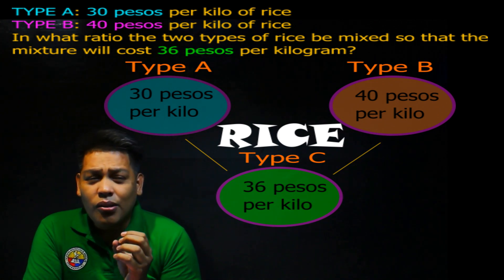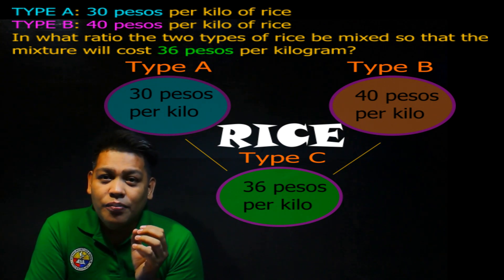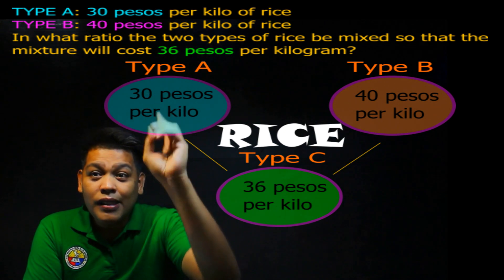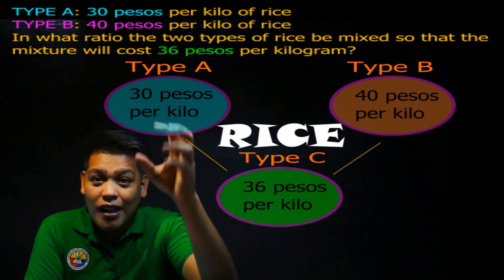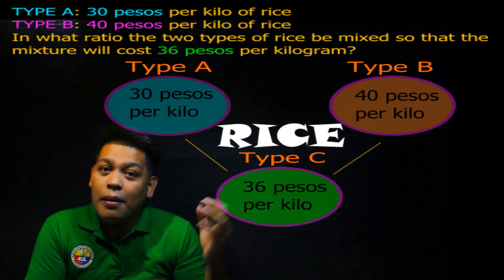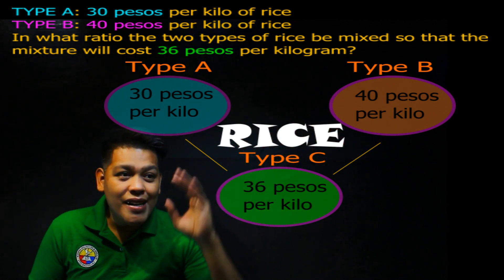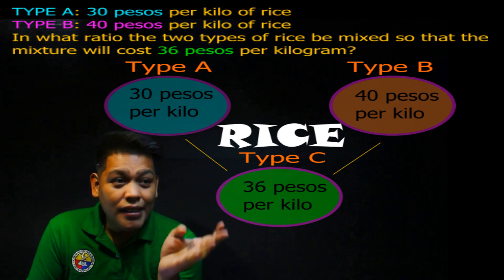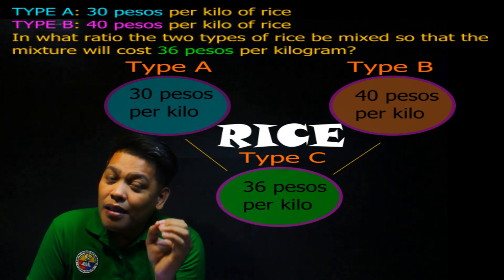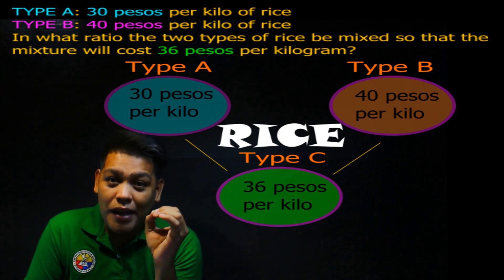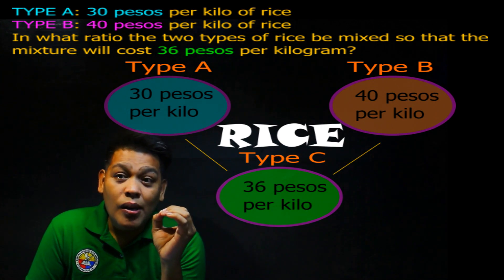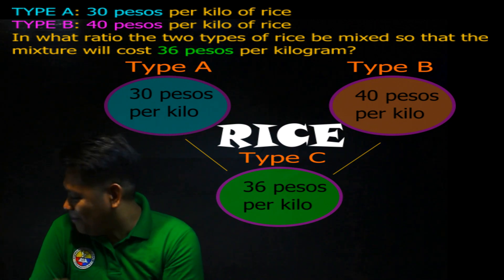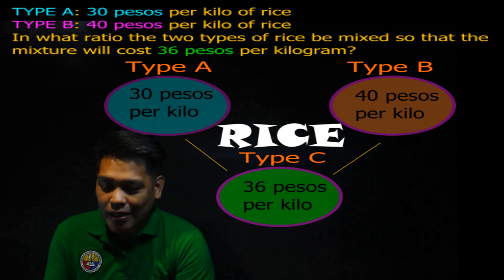Now, the question is: what is the ratio? How many kilos will you take from Type A and from Type B so you can create a Type C rice that you can sell for 36 pesos per kilo? Let's answer that.